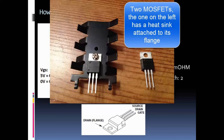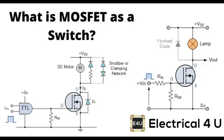An inverter, or NOT gate, is the simplest digital logic gate, often constructed using a single MOSFET — when the input is high, the output is low, and vice versa. An AND gate is constructed using multiple MOSFETs in series, where the output is high only when all inputs are high. An OR gate is created using multiple MOSFETs in parallel, where the output is high if at least one of the inputs is high.